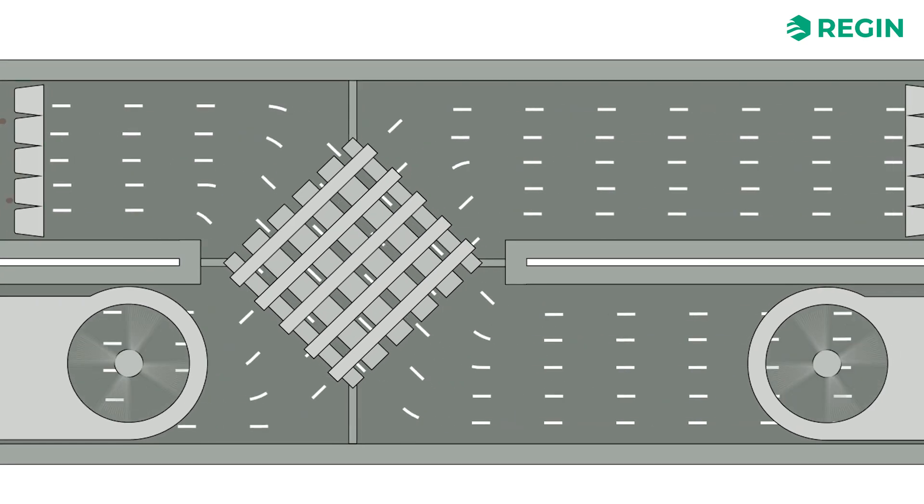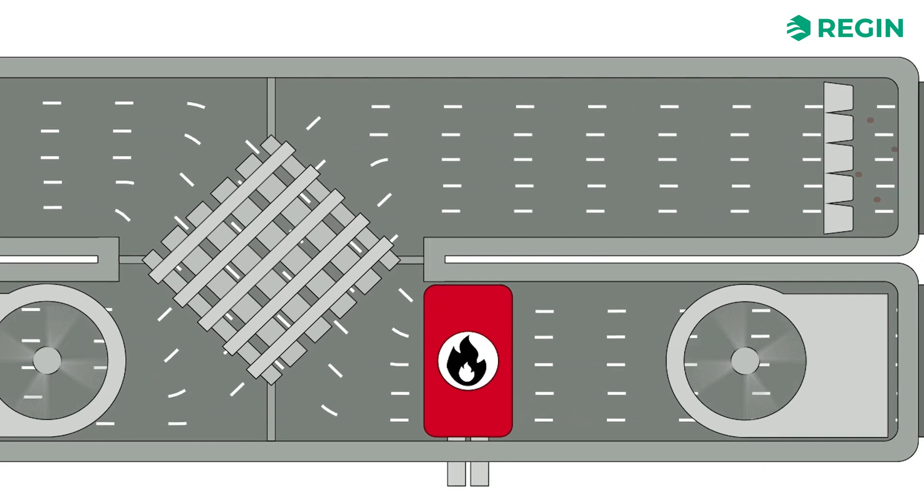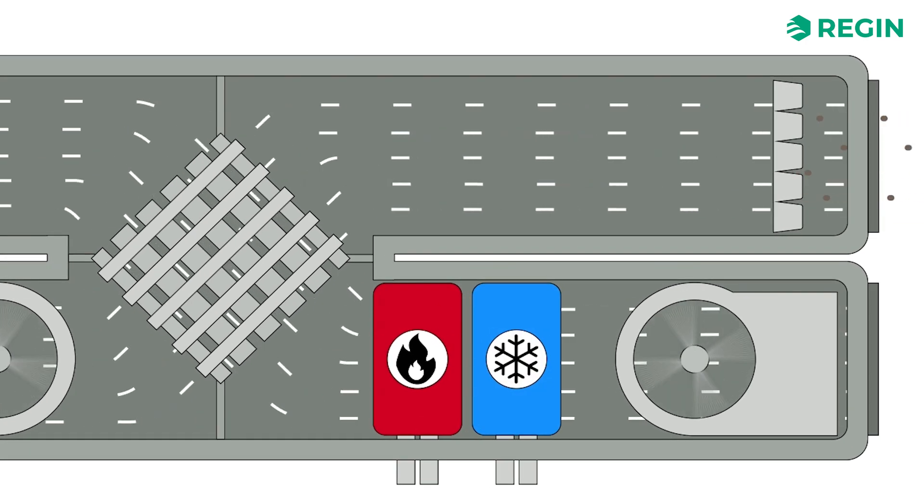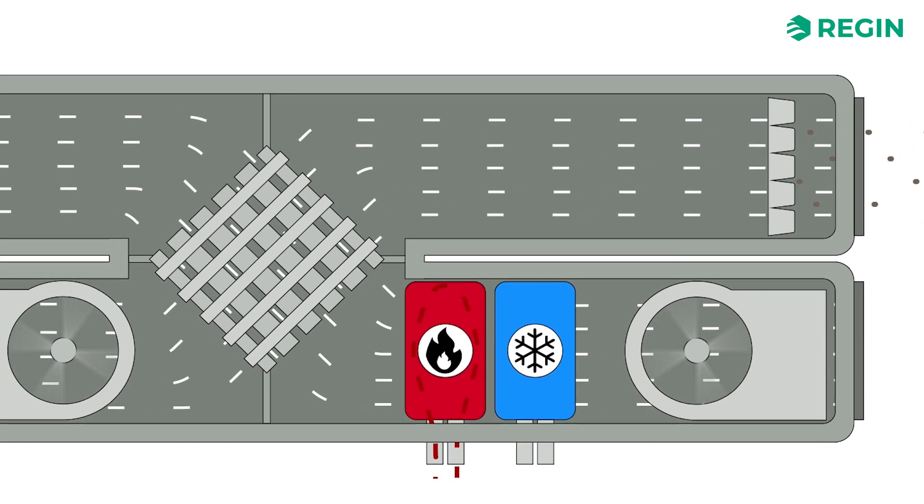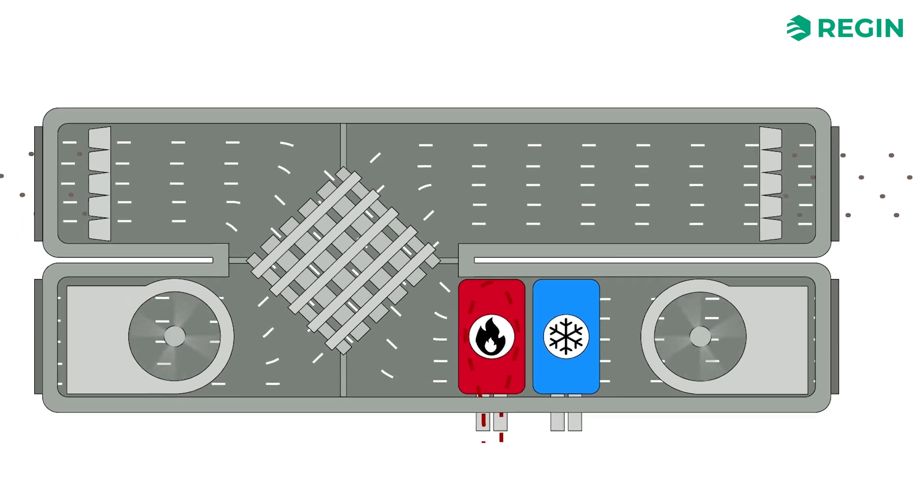The remaining energy is supplied by a heating or cooling coil. In this example, a heating coil with hot water from district heating provides the extra energy required to reach the desired set point temperature.